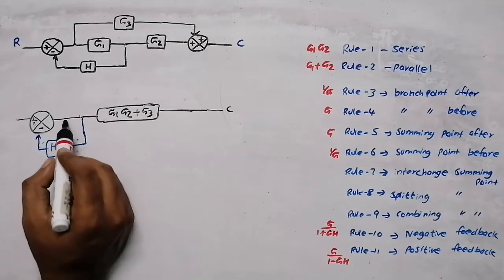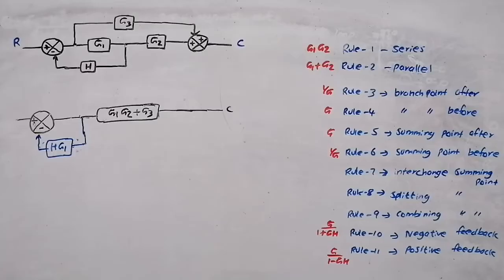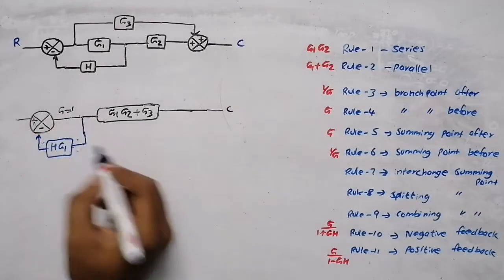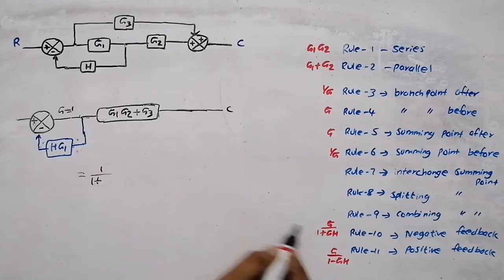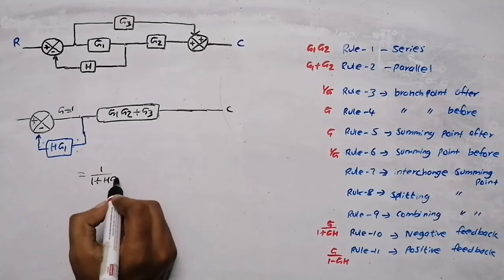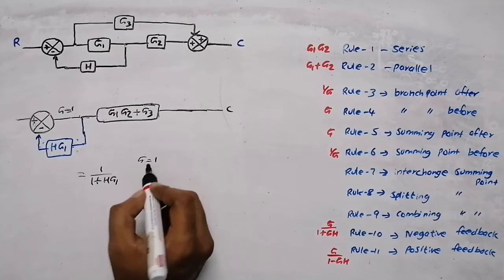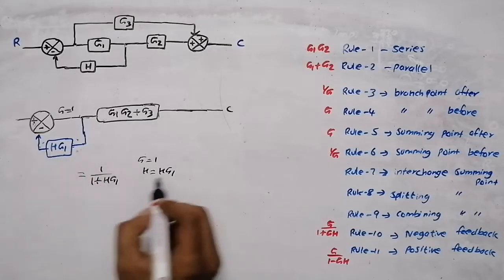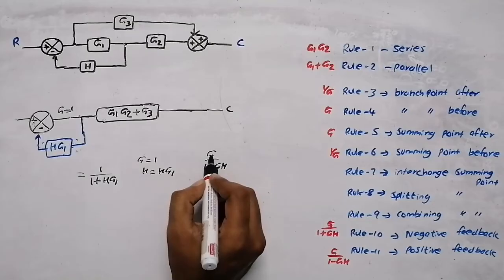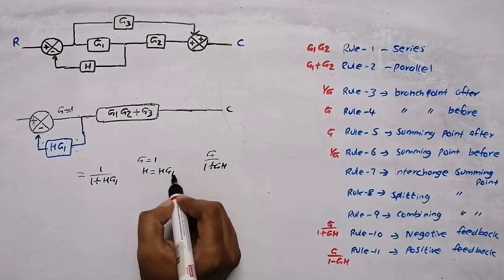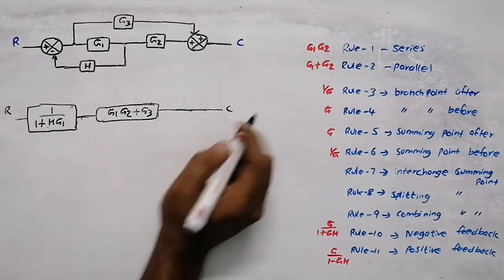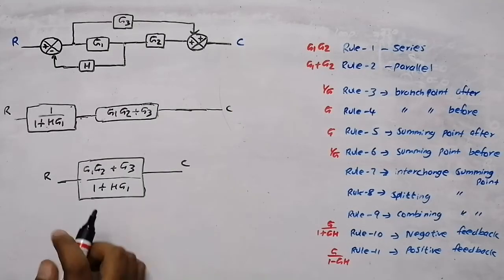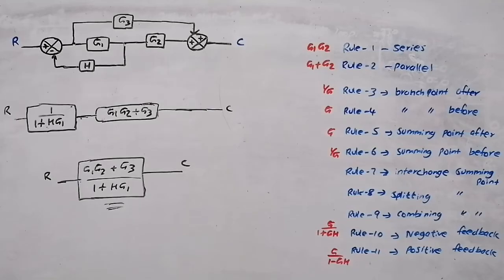Now as you can see, this is a negative feedback network. The formula is G divided by (1 + GH). But here there is no G term in the forward path, which means G equals 1. So for negative feedback: 1 divided by (1 + 1 × HG1), that is 1 divided by (1 + HG1). Here H is HG1.